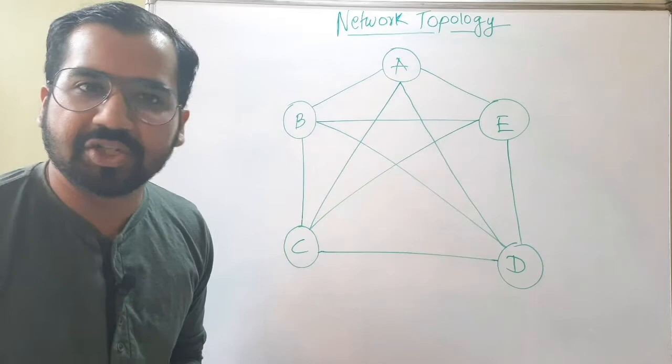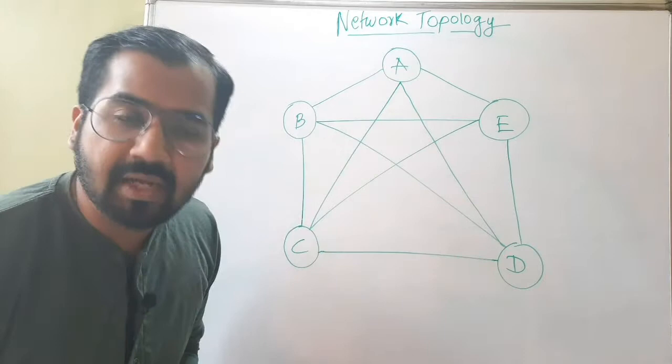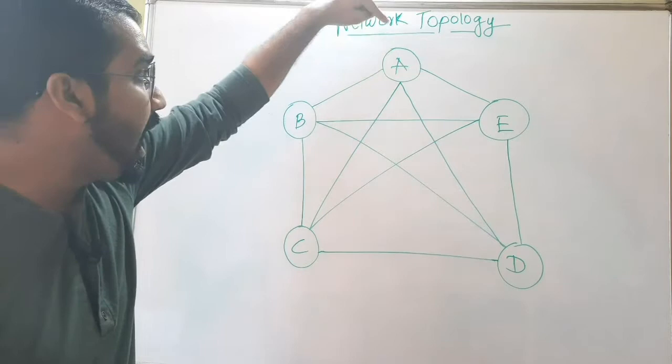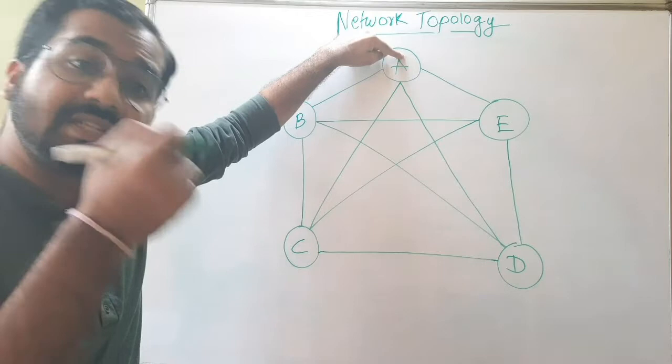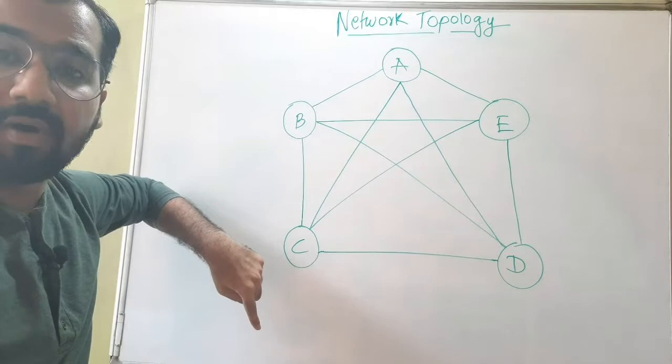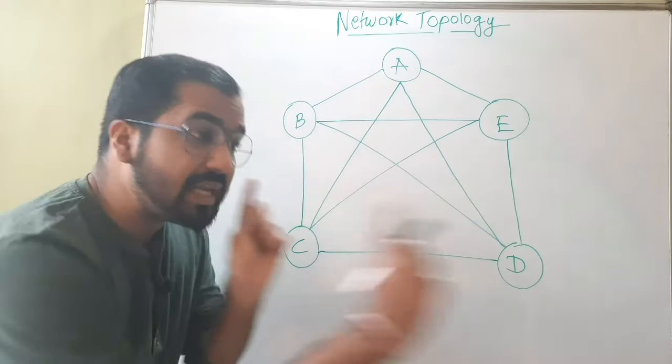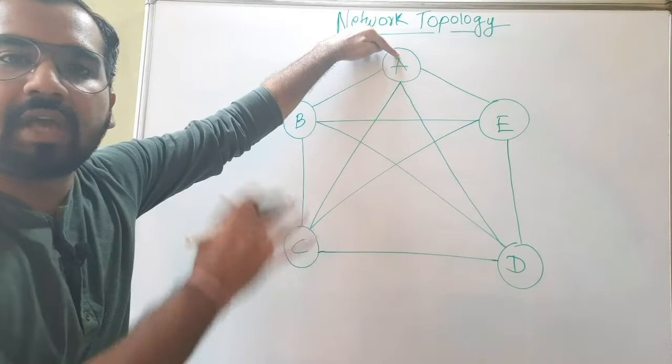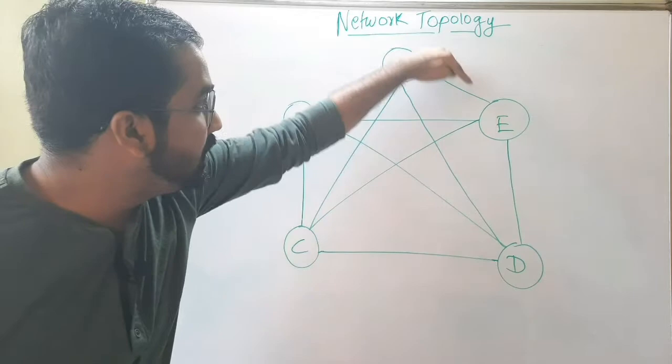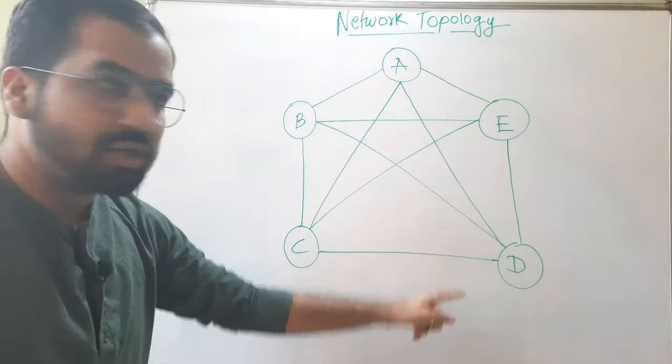What you can observe in mesh topology is the unique arrangement that makes it different from other topologies: every node — every device in your network — is connected to every other device or node with a dedicated link, a dedicated cable, a direct connection. For example, node A is connected to B with a dedicated link, to E with a dedicated link, and C and D are also connected to A.